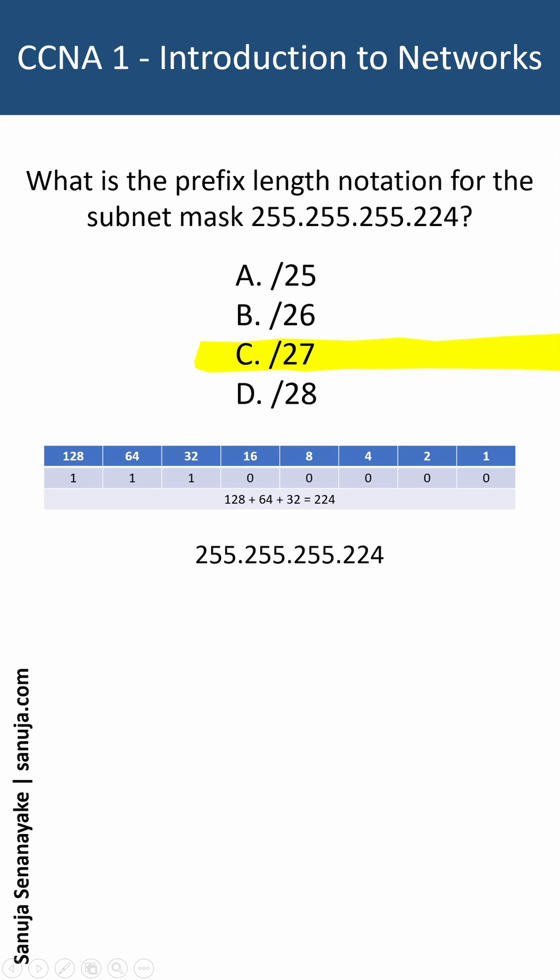Now, if you break it down into binary, the binary format for that is like this. The first octet will have all ones, second octet all ones, third octet all ones, the last octet will have three ones and rest zeros.